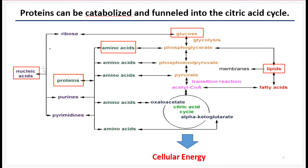For this video, I'll be describing what happens in this arrow right here. During this semester, I will not be talking about how nucleic acids can be broken down and funneled into central metabolism. However, in module 9, I will talk about how lipids and fatty acids can be broken down and oxidized and funneled into central metabolic pathways. For the remainder of this video, I'll be talking about how proteins are degraded into amino acids and under what circumstances that occurs.